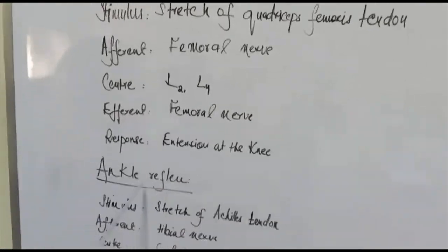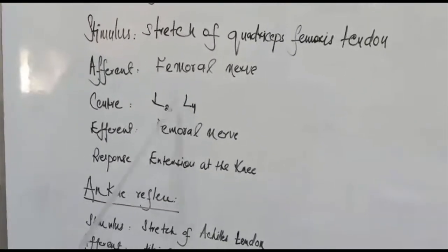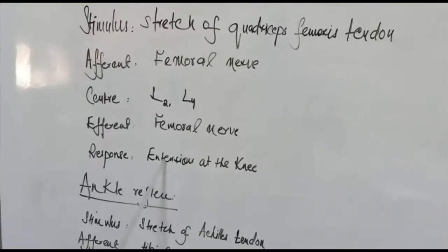In the lower limb, we perform the knee reflex and ankle reflex. For the knee reflex, the stimulus is stretch of the quadriceps femoris tendon, the afferent is the femoral nerve, the center is L2 to L4, and the efferent is the femoral nerve. The response is extension at the knee due to contraction of the quadriceps femoris muscle. The knee reflex can be elicited in both lying and sitting positions. We locate the patellar tendon between the tibial tuberosity and patella, then strike the tendon with the hammer. Extension at the knee is observed, and we repeat the test on the other limb. On both sides, the reflexes were normal.